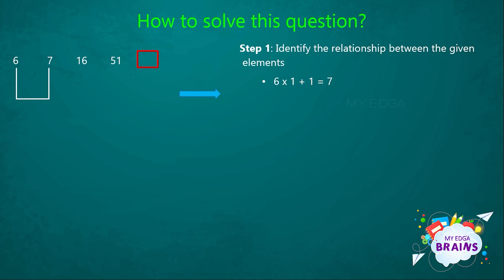Let's take the next two elements, that is 7 and 16. Here, when we multiply 7 with 2, we'll get 14. So our third element is 16. That is, 7 × 2 + 2 = 16.